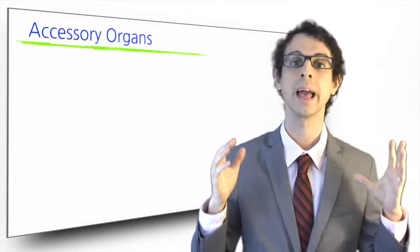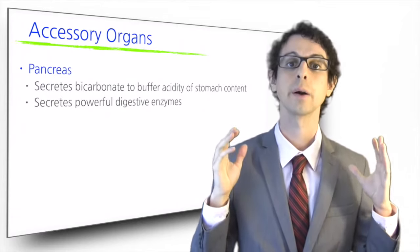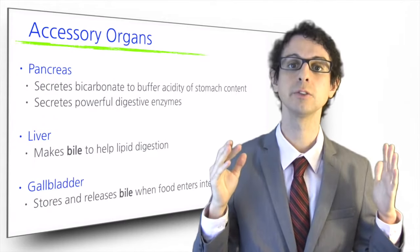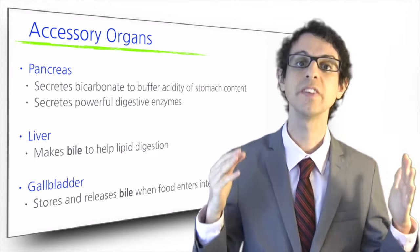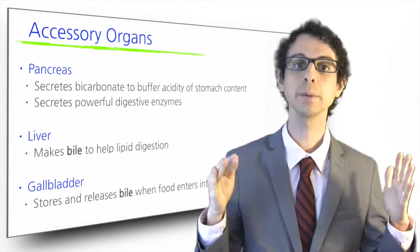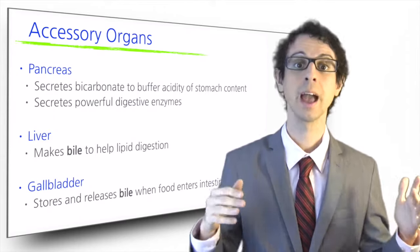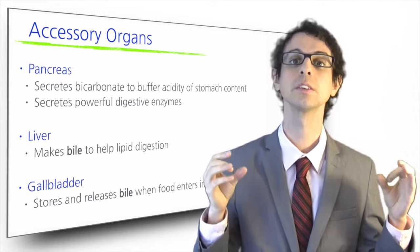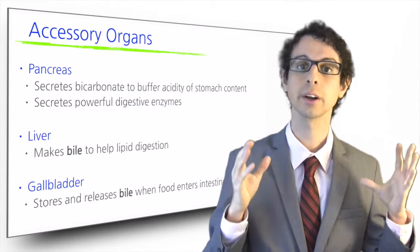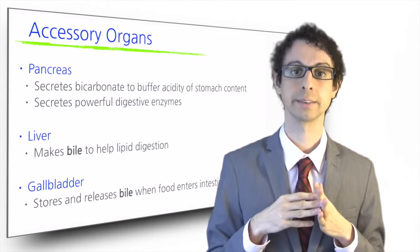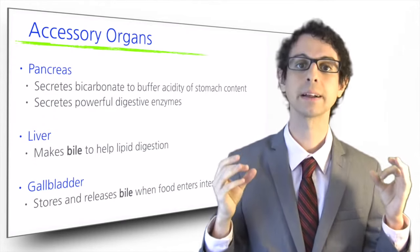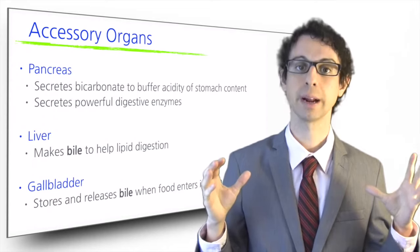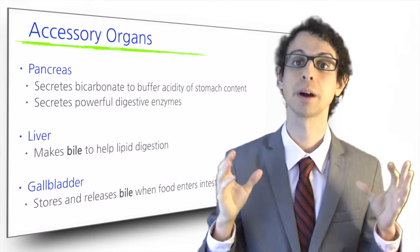Three accessory organs help digestion in the small intestine: the pancreas, the liver, and the gallbladder. The pancreas secretes a digestive juice that contains bicarbonate and many powerful digestive enzymes. Bicarbonate buffers the acidity of the food arriving from the stomach and creates ideal conditions for the pancreatic enzymes to work. Our liver produces a solution called bile, that is stored in our gallbladder and released when food enters the intestine. The bile contains important chemicals that make lipid digestion possible. Some more digestive enzymes that complete nutrient breakdown before absorption are located on the brush border.